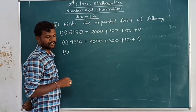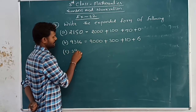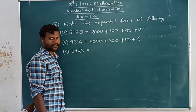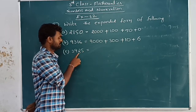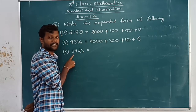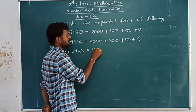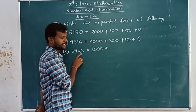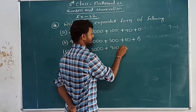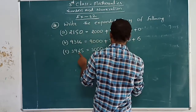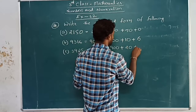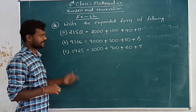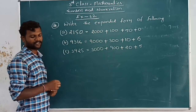C is three thousand nine hundred and twenty-five. Three is in thousands place, so three thousand. Nine is in hundreds place, so nine hundred. Two is in tens place, two tens are twenty. Plus five is in ones place, five ones are five.